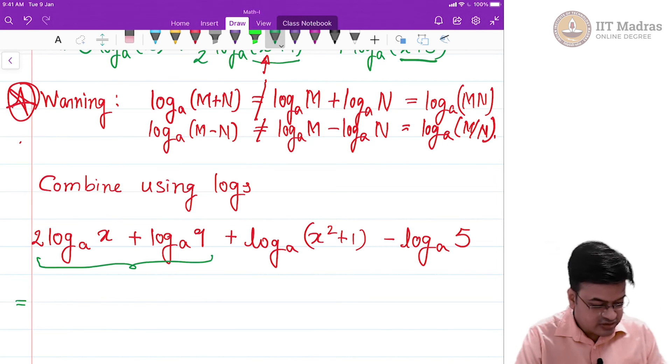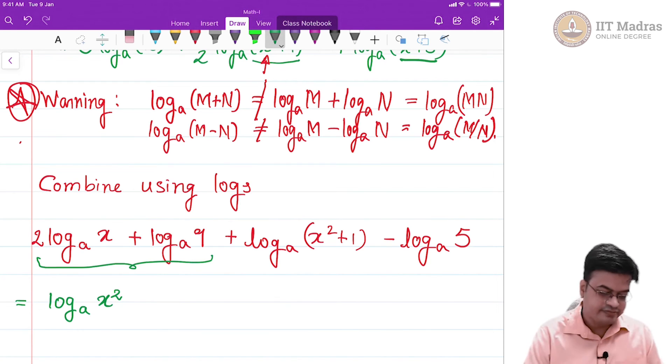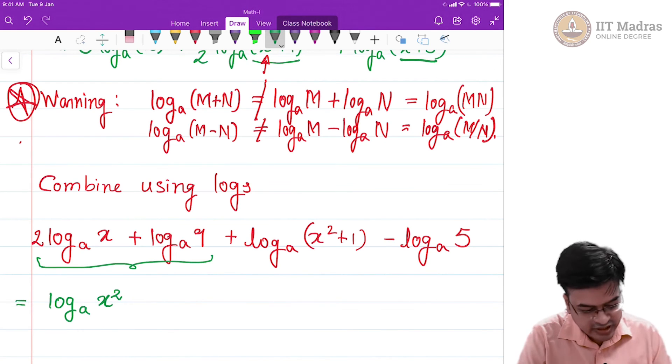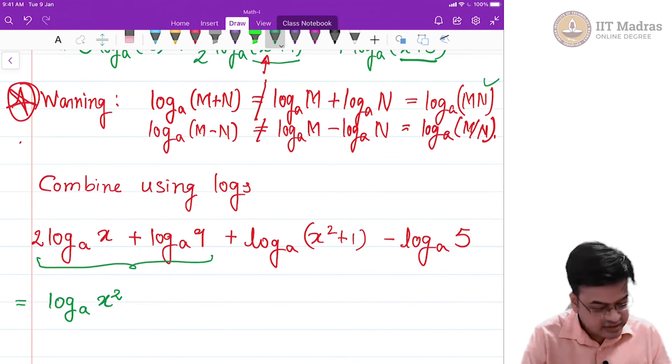You will get this particular term as log to the base a of x square. Do not stop there. Here you just apply the product rule now log to the base a of 2 times log to the base a of x plus log to the base a of 9 can actually be merged as we can use this rule and say this is equal to 9 times x square.